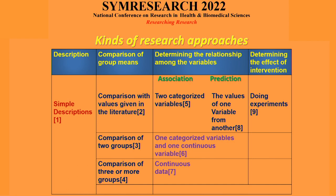How do you categorize all these examples? We have simple descriptions, comparison of group means — generally you do the t-test — comparison of more than two groups using one-way ANOVA, associations, and determining the effect of an intervention. These are all things you do.